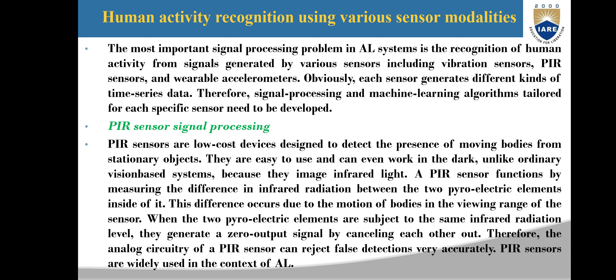Human activity recognition using various sensors and models: The most important signal processing problem in AAL systems is the recognition of human activity from signals generated by various sensors, including vibration sensors, PIR sensors, and wearable accelerometers. Obviously, each sensor generates a different kind of time series data. Therefore, signal processing and machine learning algorithms tailored for specific sensors need to be developed.